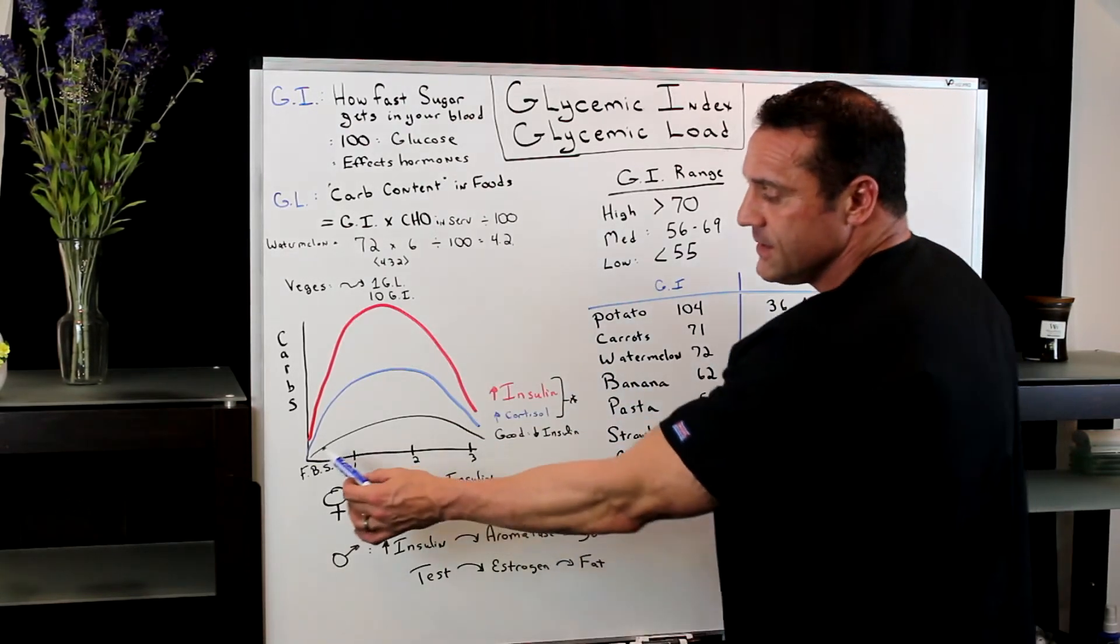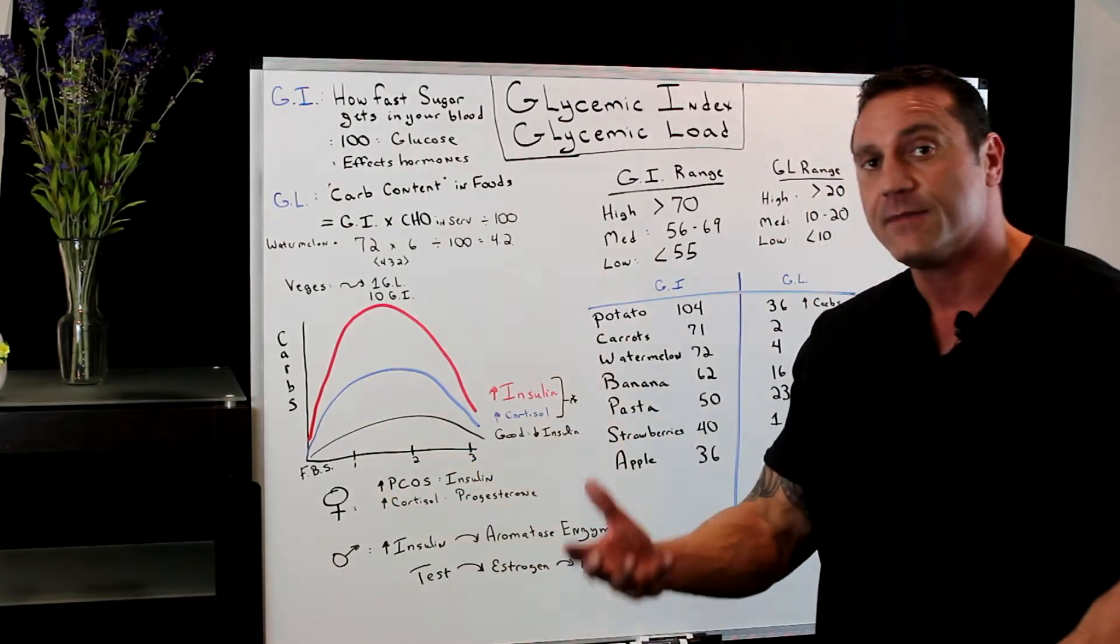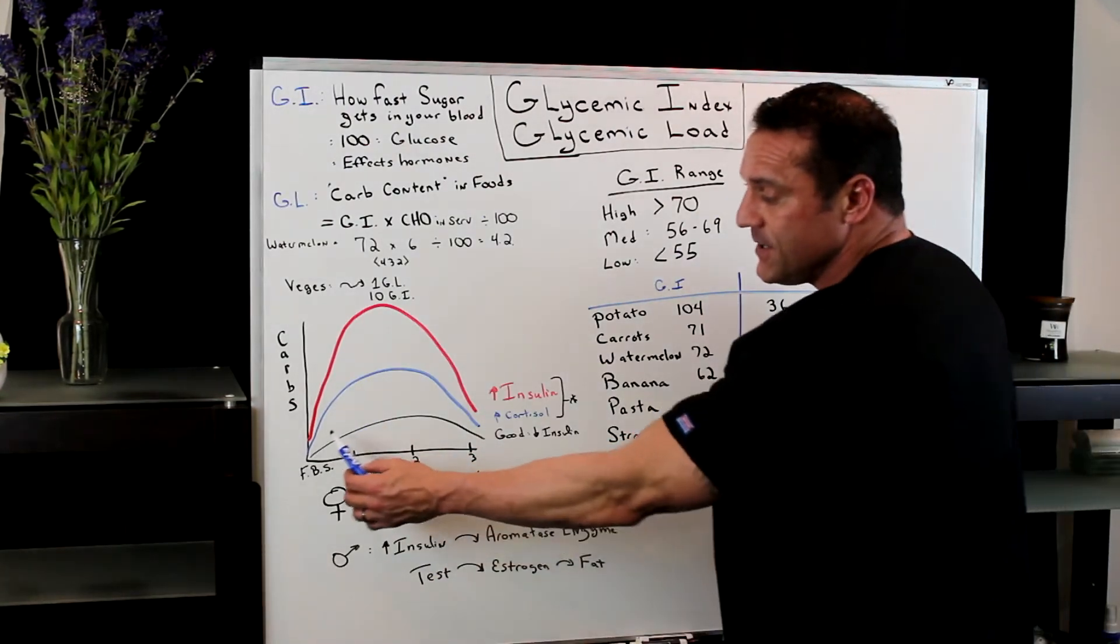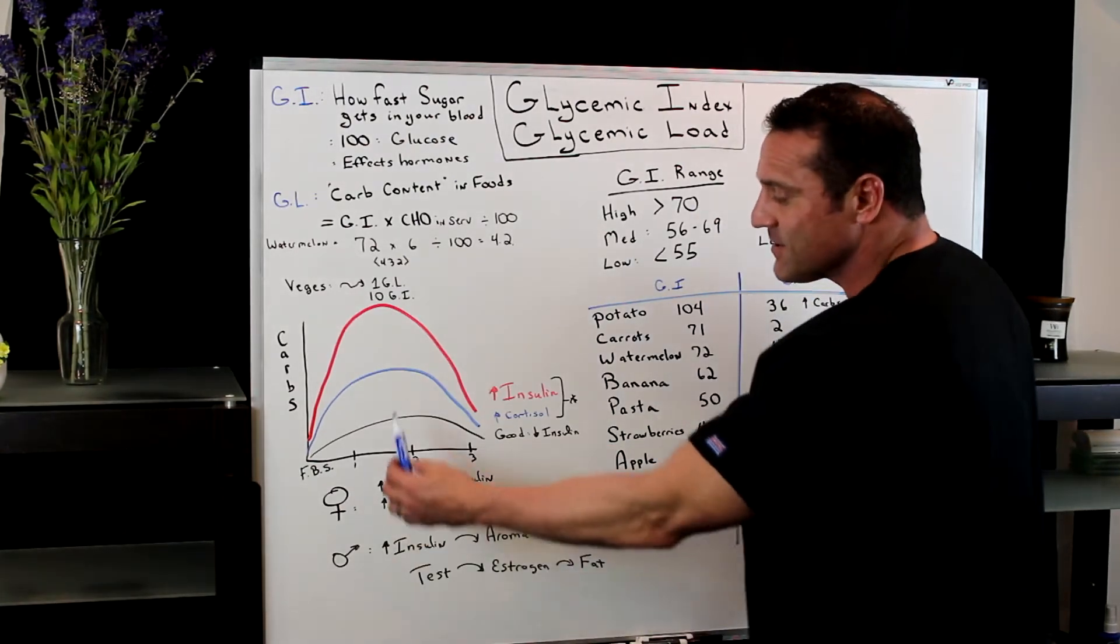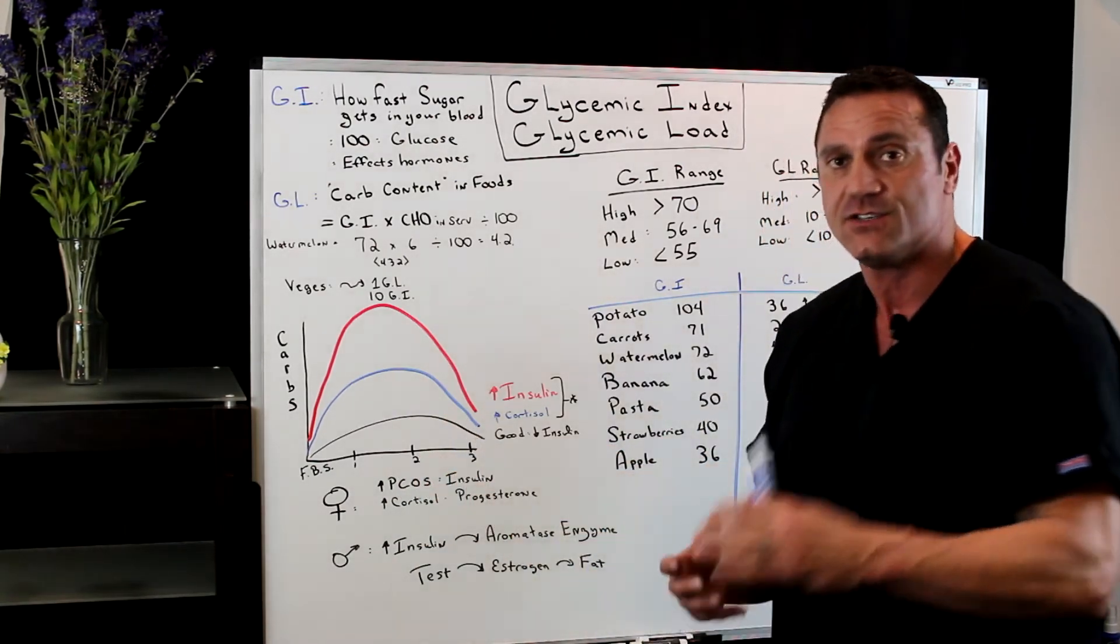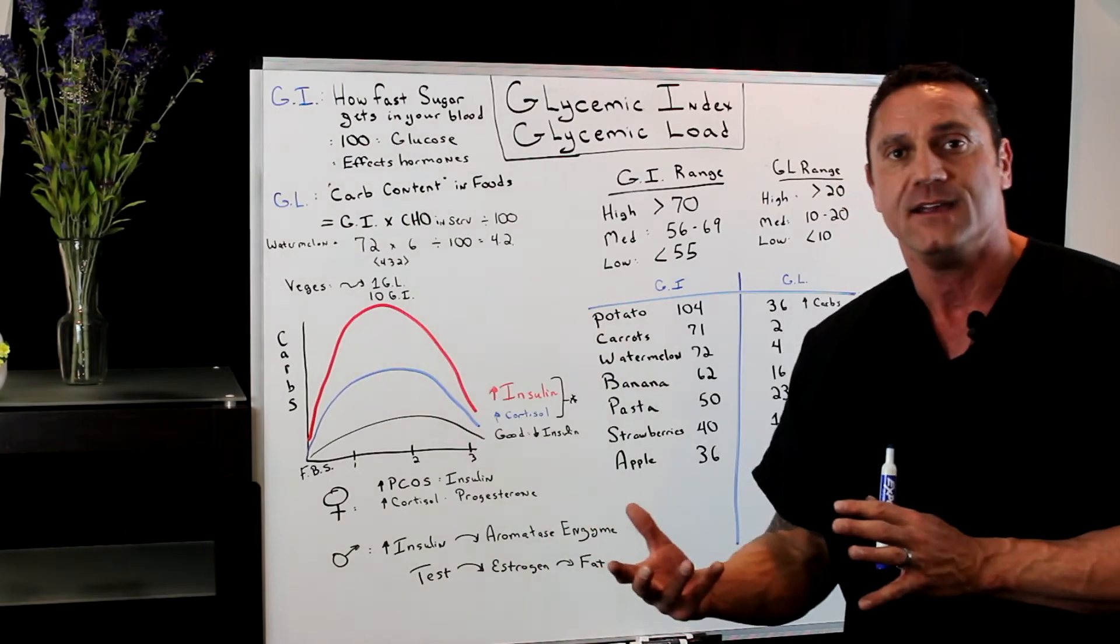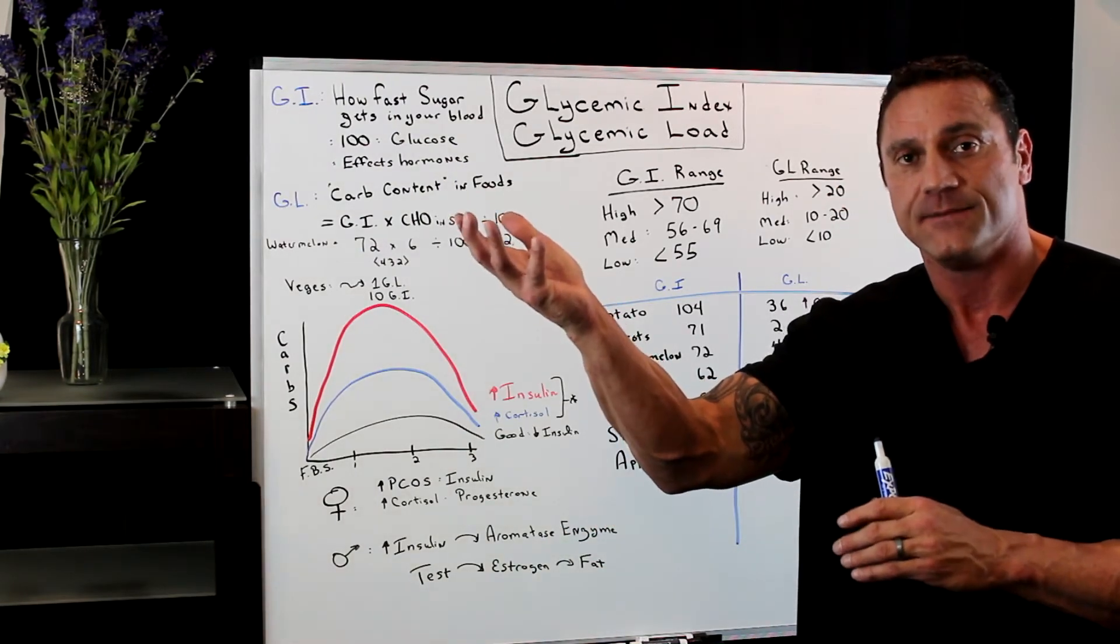Then we have another one, a more elevated carby food. What's going to happen, you're going to have the increase in blood sugar. Insulin is going to be released and then it's going to drop severely. The shock to the body is intense. This is where you get elevated cortisol level.